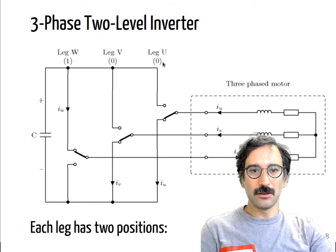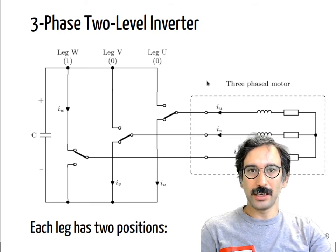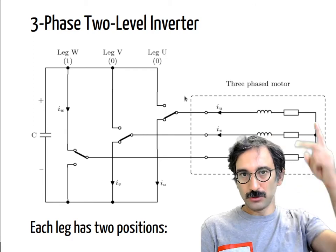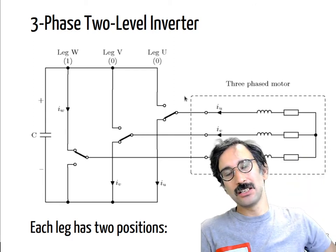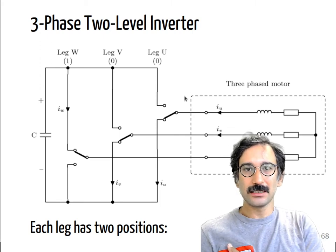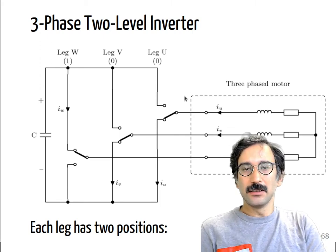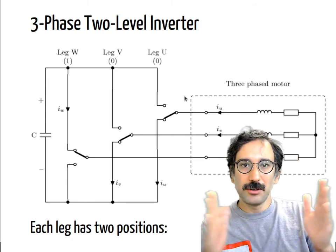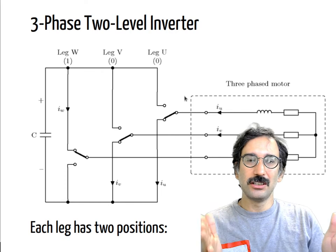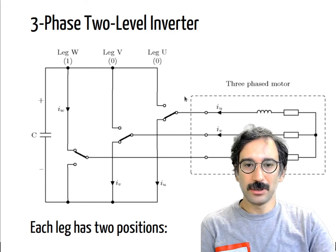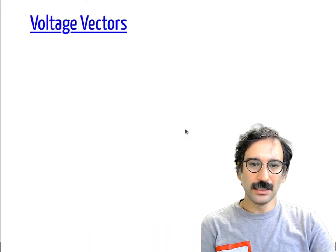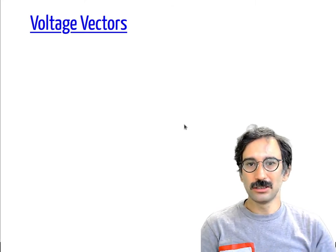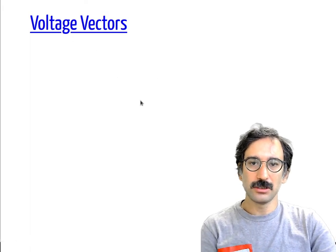For this configuration we can represent the states like a binary system. There are two positions for each leg, and since there are three legs, there are eight possible combinations — eight different combinations that can be represented as a three-digit binary number. We will call these voltage vectors.